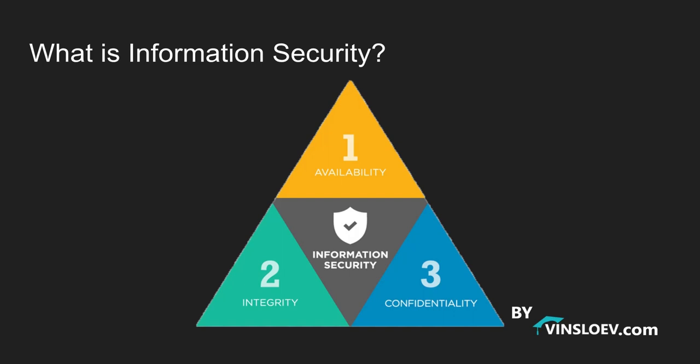The term information security and cybersecurity in general can be broken down into three different principles: number one, availability; number two, integrity; and number three, confidentiality. Let's take a closer look at these three principles.